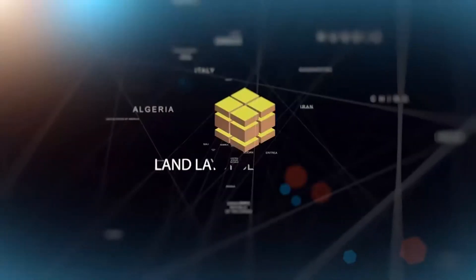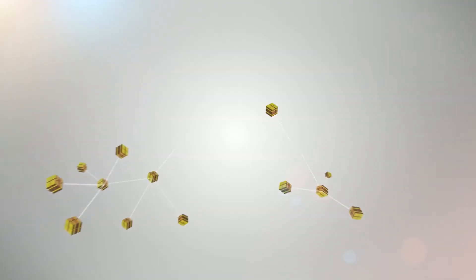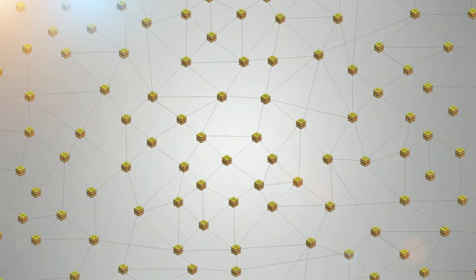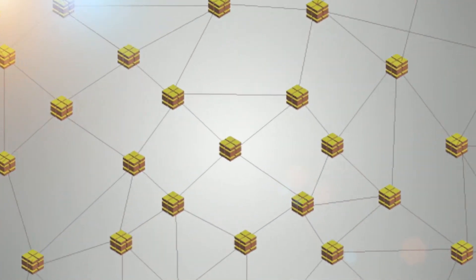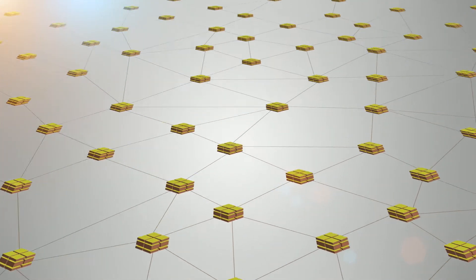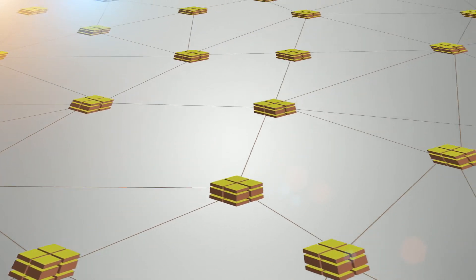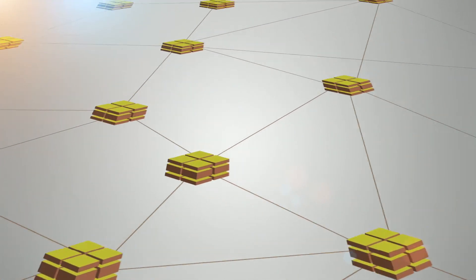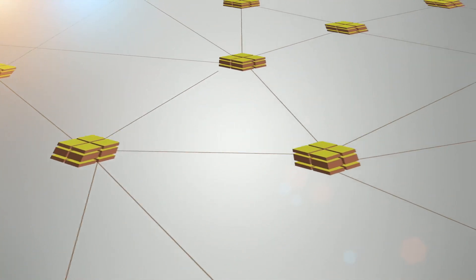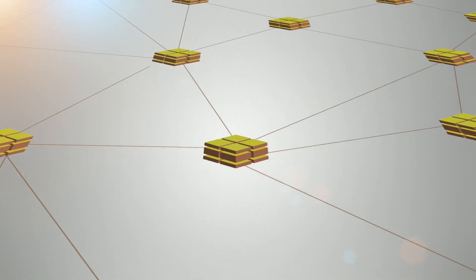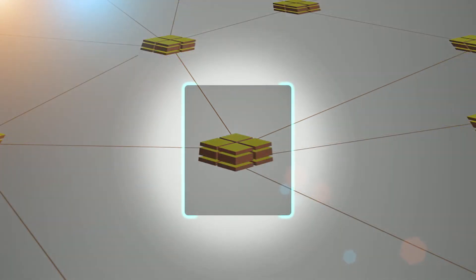Land ledger by blockchain is a continuous list of land transaction records for a specific parcel of land. The land transaction information constitutes a complete block, which is then linked like a chain to a different block containing another set of land transaction details. These blocks are then secured using special and unbreakable codes, a process known as cryptography.